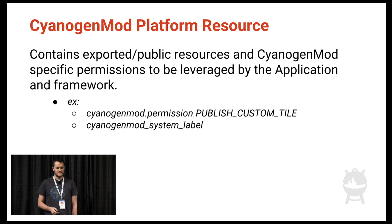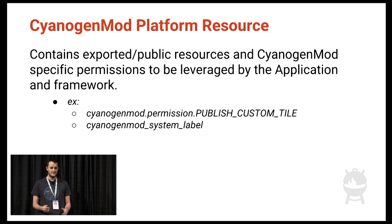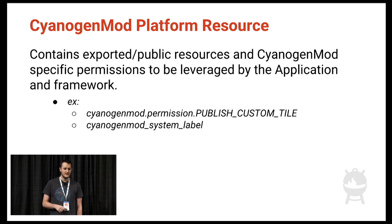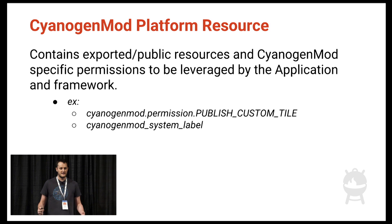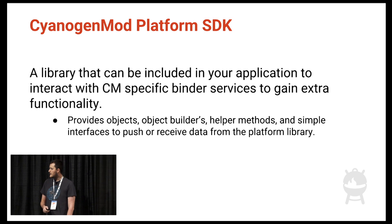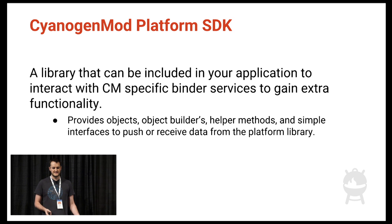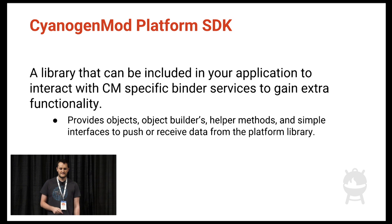We also have a resource package, so if we want a system label to reuse across applications, we have a very specific identifier we can query those resources with — drawables or anything in between. We can also declare our own permissions that carry forward across platform releases. But the biggest point is the platform SDK — essentially a JAR you can toss into your project. These are the stable interfaces that can invoke the system binder calls, and you'll actually have access to these features.